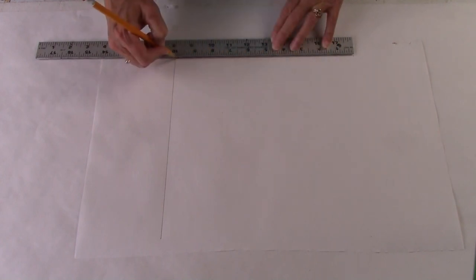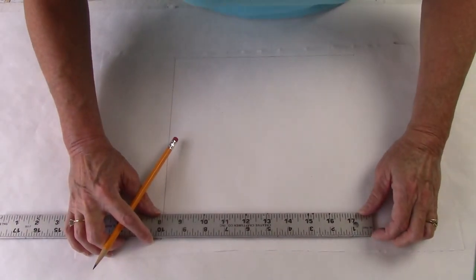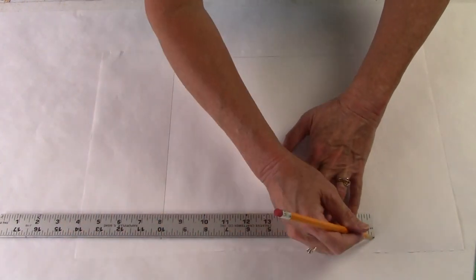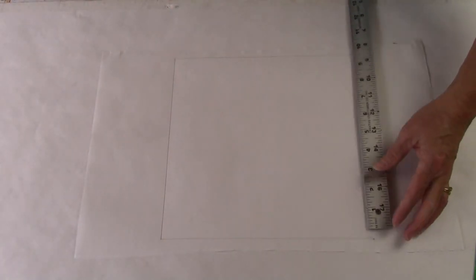The first step is to establish the size and the shape. I'm using a ruler and a pencil to draw my square. I draw everything in pencil first because then I have the flexibility of erasing it and changing things if needed.